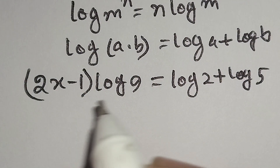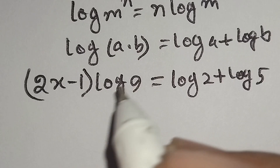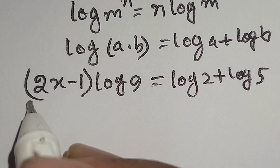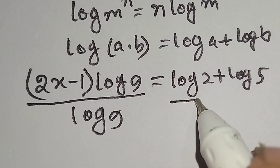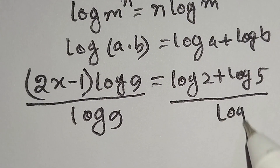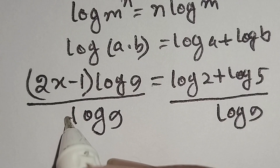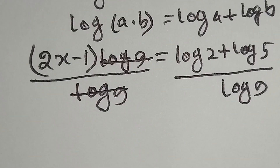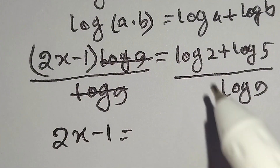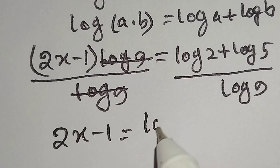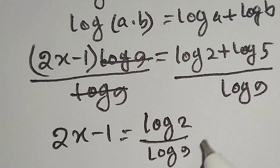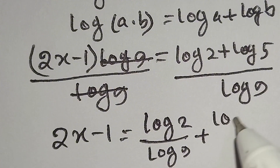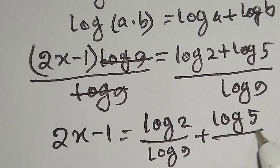Now we will divide both sides by log 9 to eliminate it. This gives us 2x minus 1 is equal to log 2 over log 9 plus log 5 over log 9.